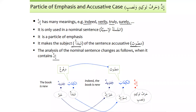Alkitaba becomes ismu inna and jadeedun becomes khabaru inna. Inna has essentially owned the whole sentence. The easiest way to remember: the immediate noun — a singular noun, mufrad — after inna will always be mansoob and called ismu inna, and the predicate will be called khabaru inna.